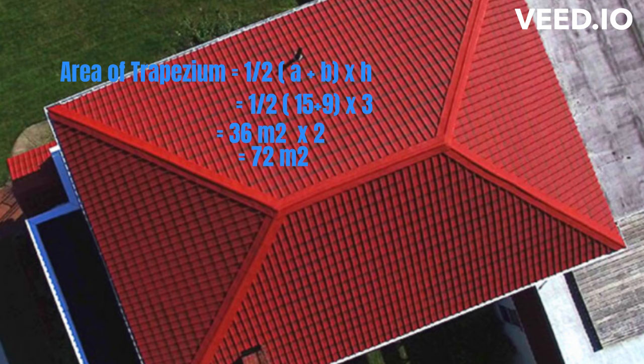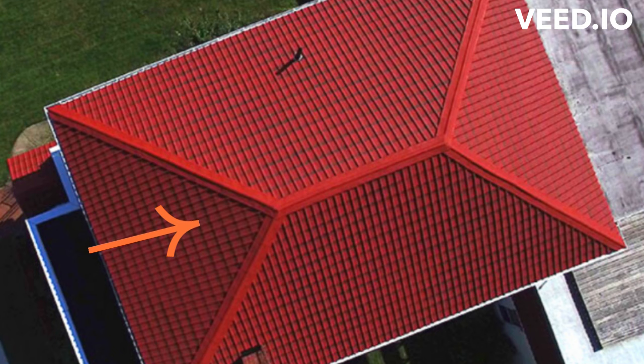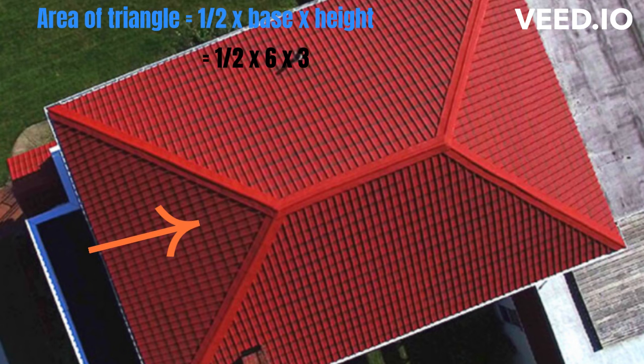The area of one triangle is half into base multiplied by the height: half multiplied by 6 meters and a height of 3 meters equals 9 square meters. We multiply by 2 because there are two triangles, to get 18 square meters.